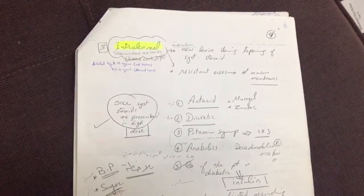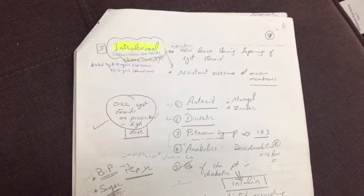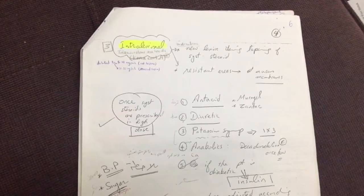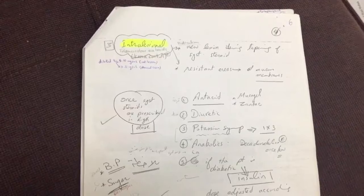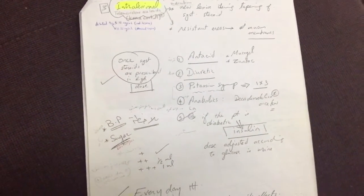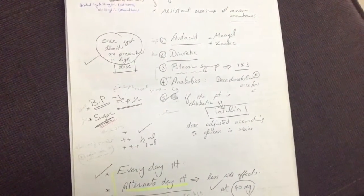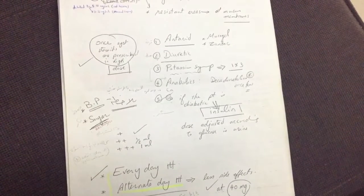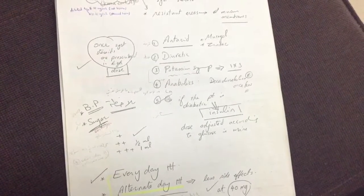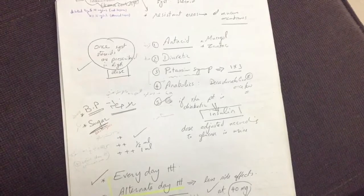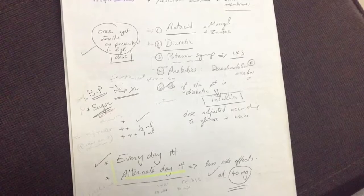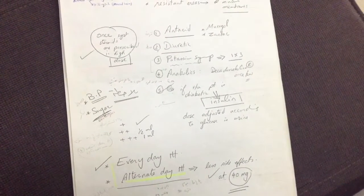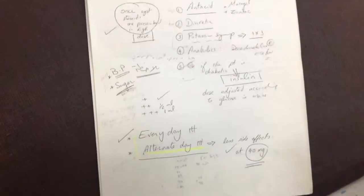The third corticosteroid option is intralesional triamcinolone acetonide injection. Indications include new lesions appearing during tapering of systemic steroids, or resistant areas like mucous membranes. When systemic steroids are prescribed in high doses, give antacid, diuretic, potassium supplementation, anabolics, calcium, and if the patient is diabetic, insulin adjusted according to urinary glucose. Alternate-day treatment at 40 mg has fewer side effects.